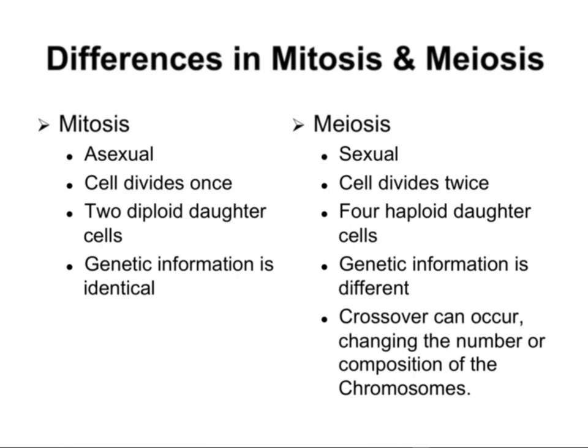Mitosis is asexual. Meiosis is for sexual cells — the sex cells. Cells divide once in mitosis; cells divide twice in meiosis because of the reductional division, giving four cells instead of two. Two diploid cells at the end of mitosis continue on in meiosis to create four haploid daughter cells. One big difference between the two is the genetic information differs in the cells because there's a crossing-over event due to the single-copy chromosome arrangement after division.